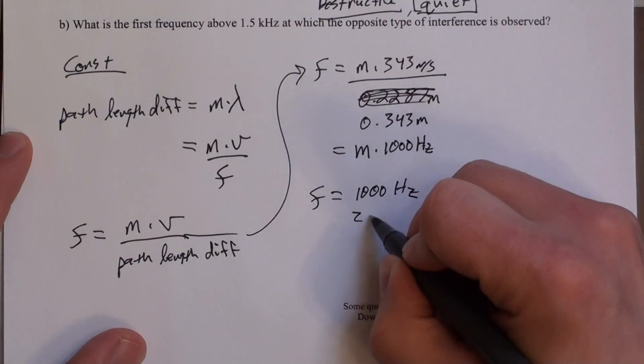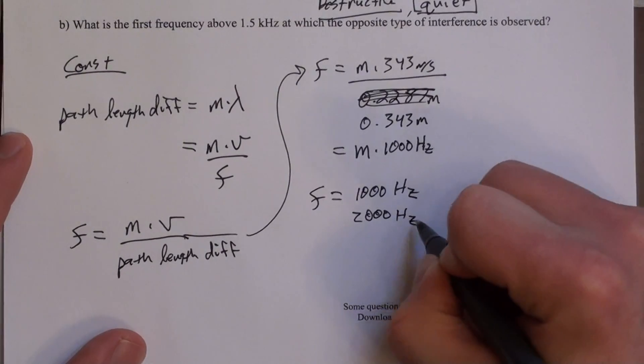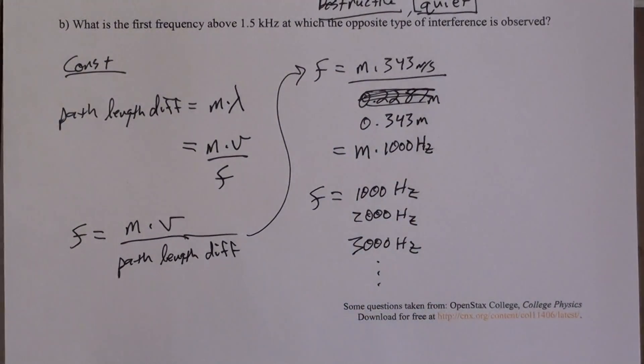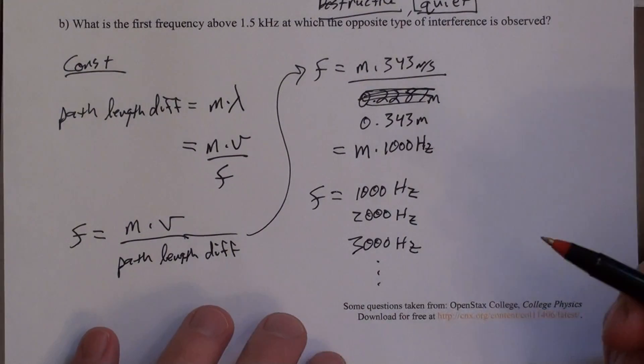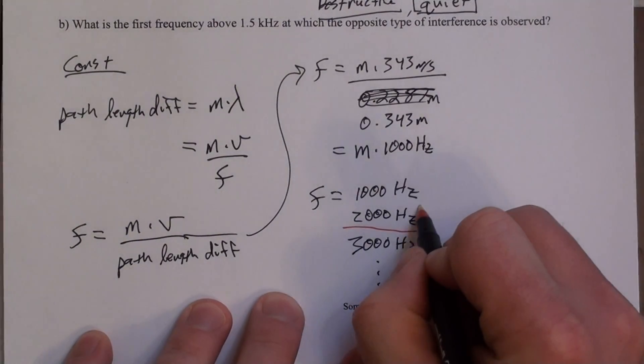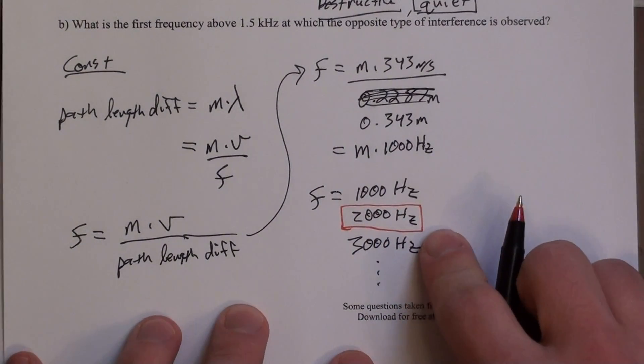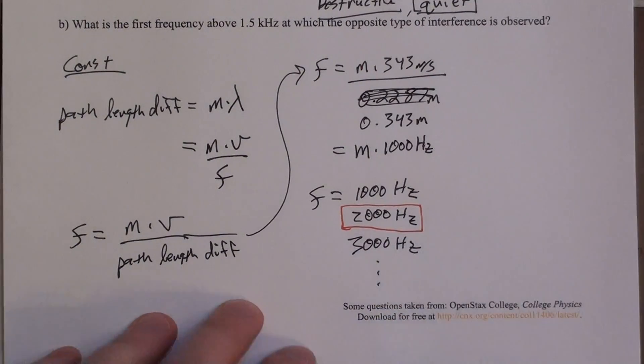The first one of those that is above 1500 is this one. So that's our answer. The first constructive frequency above 1500 hertz is 2,000 hertz.